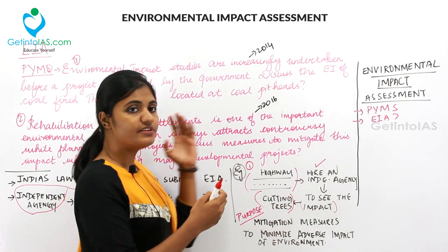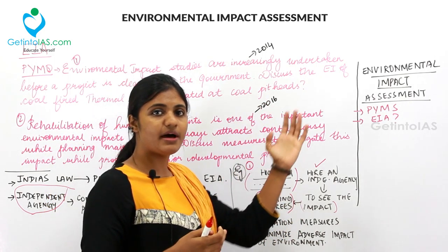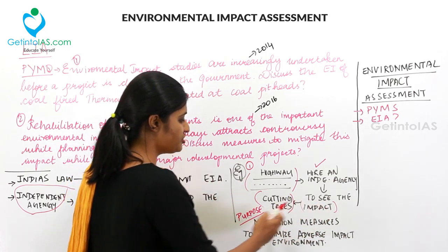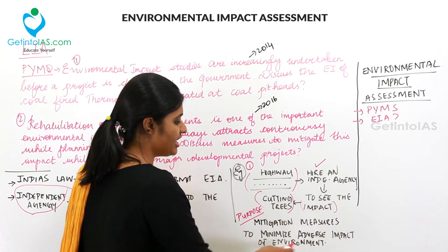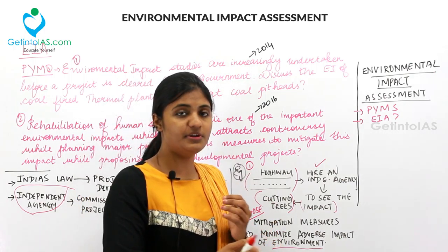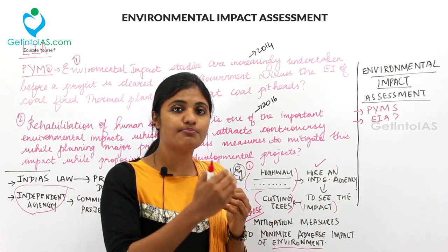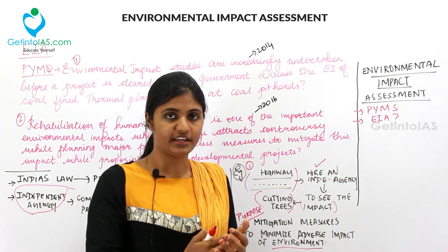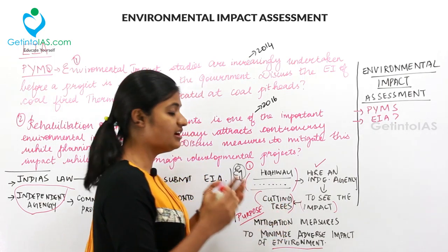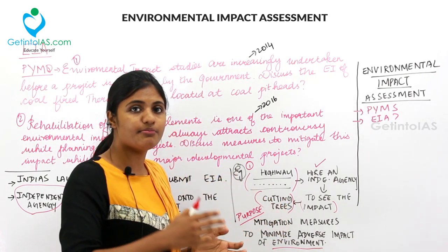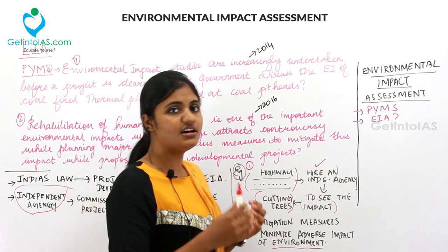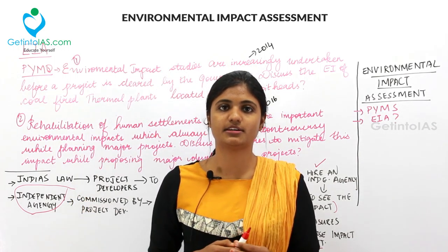What is the purpose of Environmental Impact Assessment? The first thing is the mitigation measures to minimize adverse impact on the environment. When you do something against the environment, there will be impacts. The mitigation measures will be provided by the environmental impact assessment, and that is the main purpose under it.